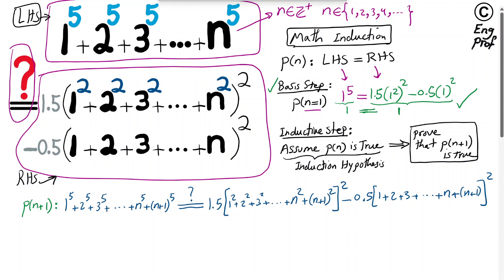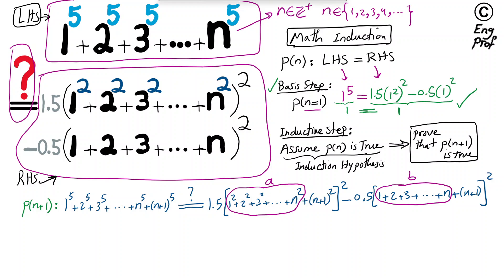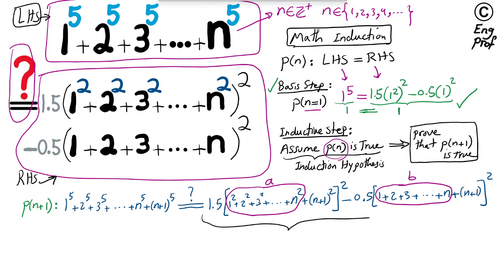Now we use a quick trick. I'm going to refer to the sum of squared integers (1² + 2² + ... + n²) as A, and the sum of consecutive integers (1 + 2 + ... + n) as B. This allows me to use the induction hypothesis, which relies on P(n).